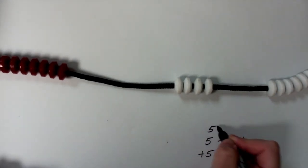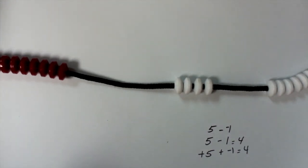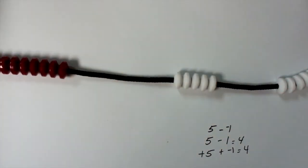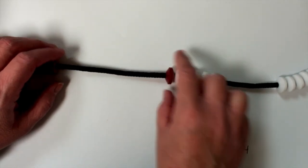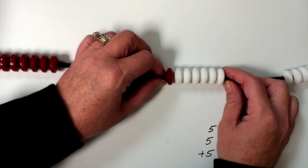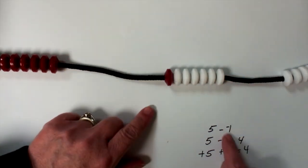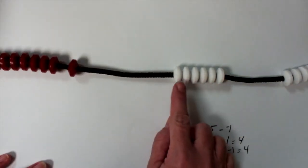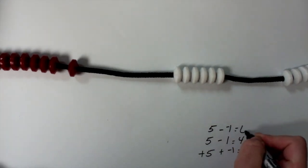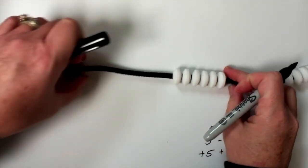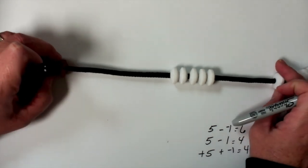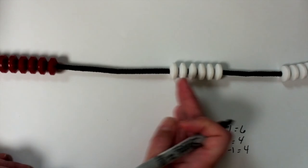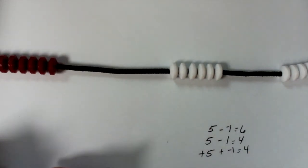Now let's do five take away a negative one. If I've got positive five — this is where I said we've got to build those zero pairs beforehand — and I'm going to take away a negative one, I have to build a negative one. So here is this negative one, and I'm going to bring in a zero pair to match that. Now can I take away a negative one? I can. And what do I have left? Six.